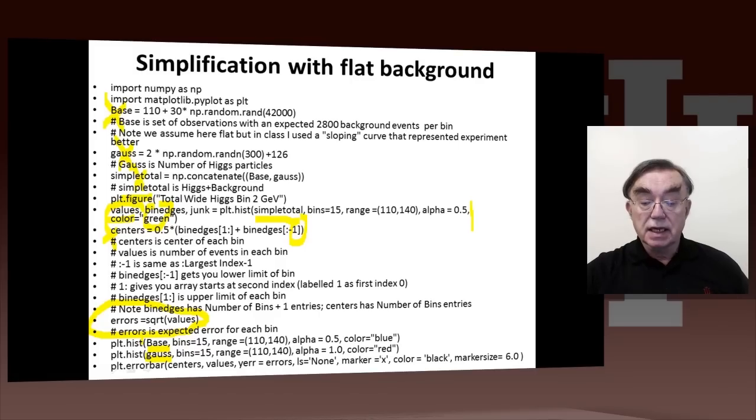And then we specify default line style, that's LS. Marker, which is going to be an X. That's the midpoint of the error bars. And the color is black, and then the size of the marker we set to 6 points.